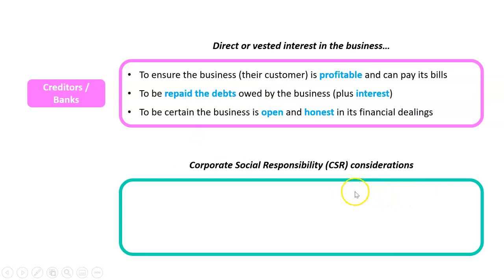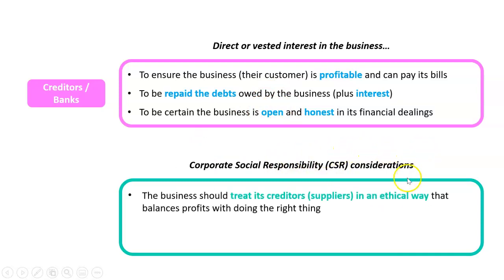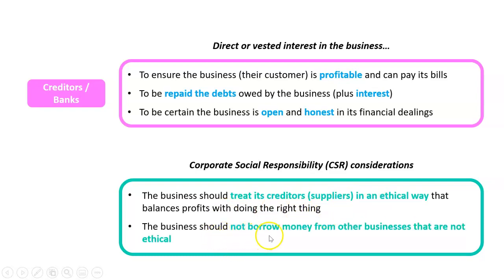There are also corporate social responsibility issues to consider. The business should treat its creditors or suppliers in an ethical way that balances profits with doing the right thing. Also, the business should not borrow money from other businesses that are not ethical. So if you find out a bank has been engaging in bad behavior — which has happened quite a bit in Australia in the last few years — and you are a socially responsible business, you might say, 'I don't want to borrow from that bank,' and find one that does engage in ethical and socially responsible operations.